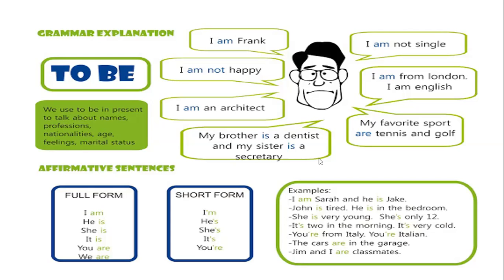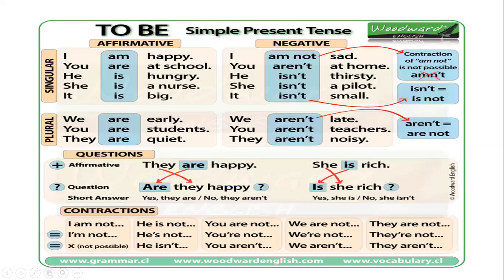Here you have the structure. For affirmative sentences with singular pronouns — I, you, he, she, it — for example: I am happy. You are at school. He is hungry. She is a nurse. It is big. For the plural pronouns — we, you, and they — the conjugation is 'are' for all of them: We are early. You are students. They are quiet.